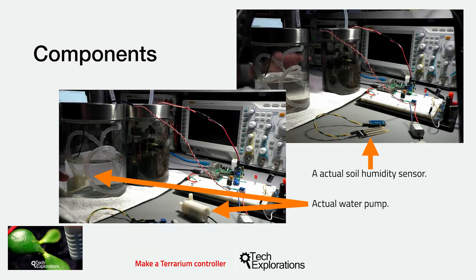The DC motor allows me to test the motor control circuitry and the motor power supply. Once I'm confident that those individual software and hardware components work, I can replace the potentiometer and the DC motor with the actual soil humidity sensor and the water pump. In the photos in this slide you can see the actual water pump on the left and the soil humidity sensor on the right — both are very low cost generic components, so I suggest that you purchase at least two of each.